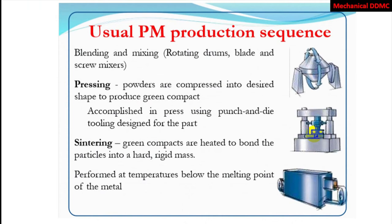In the usual powder metallurgy production sequence, after production of powders from different metals, the first step is blending and mixing — we are mixing or blending those powders so that they are intermixed with each other. And pressing means we are compacting these powders to make them join together, similar to welding but forming a compact bond. They will be pressurized to give some green shape.